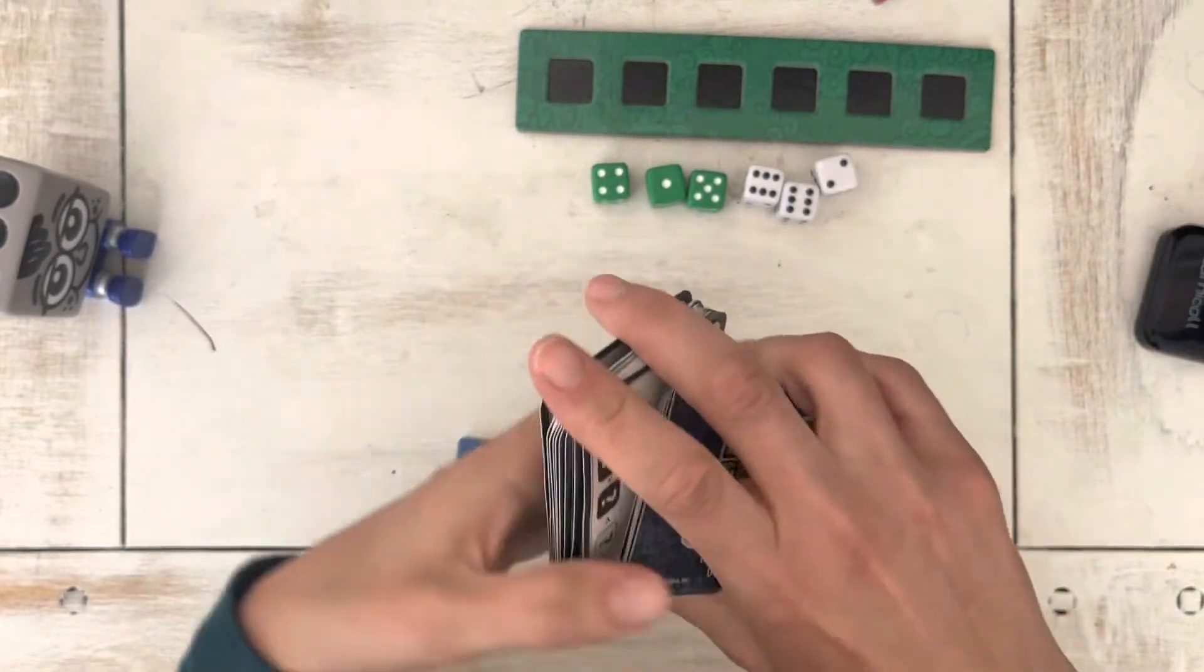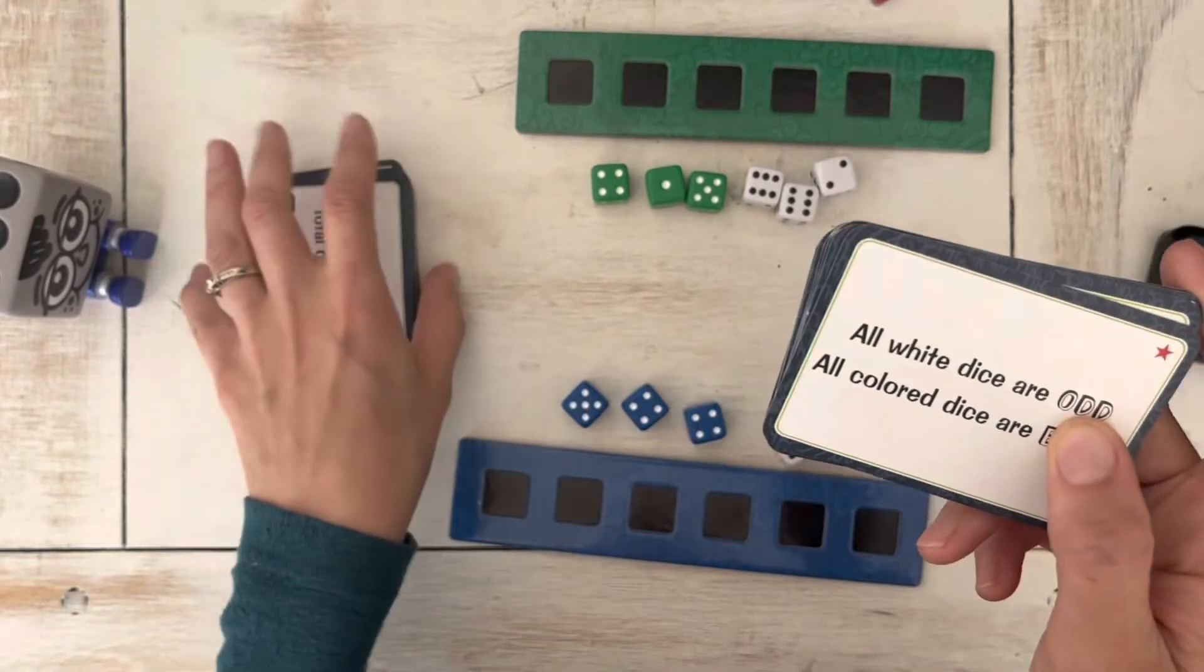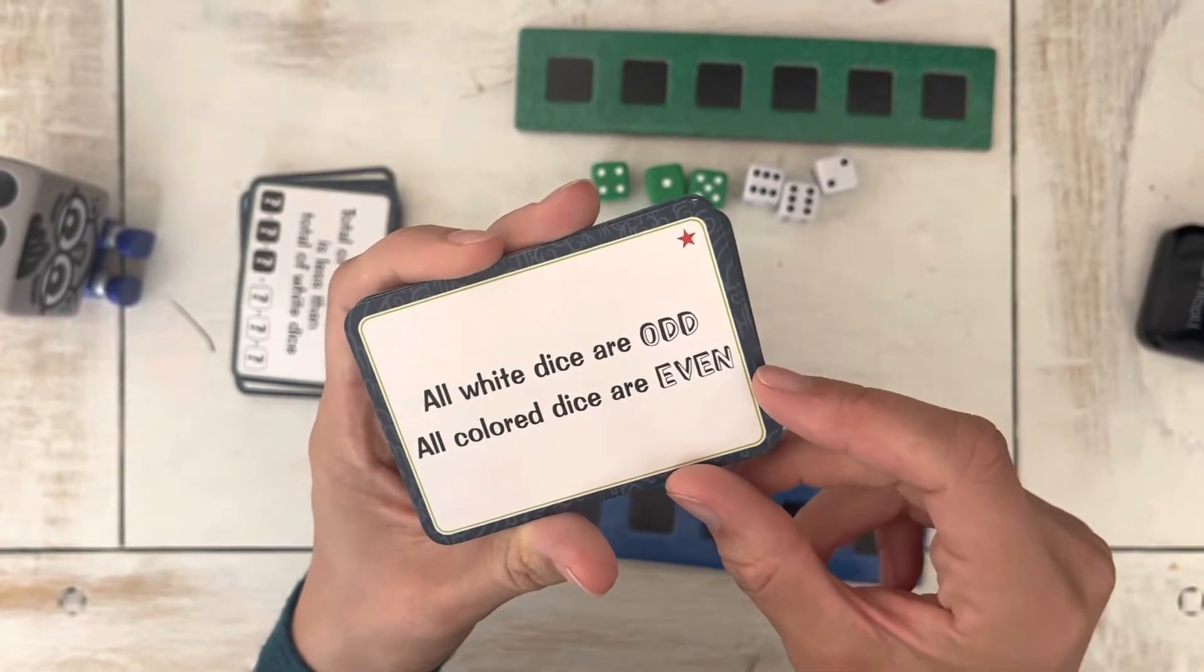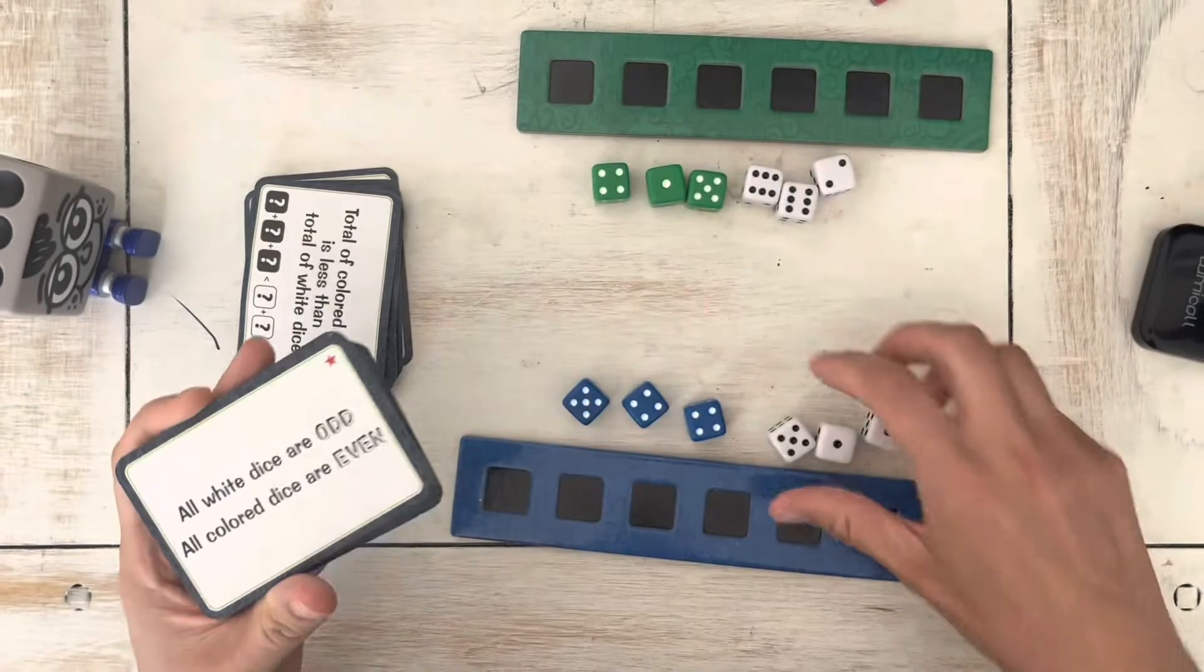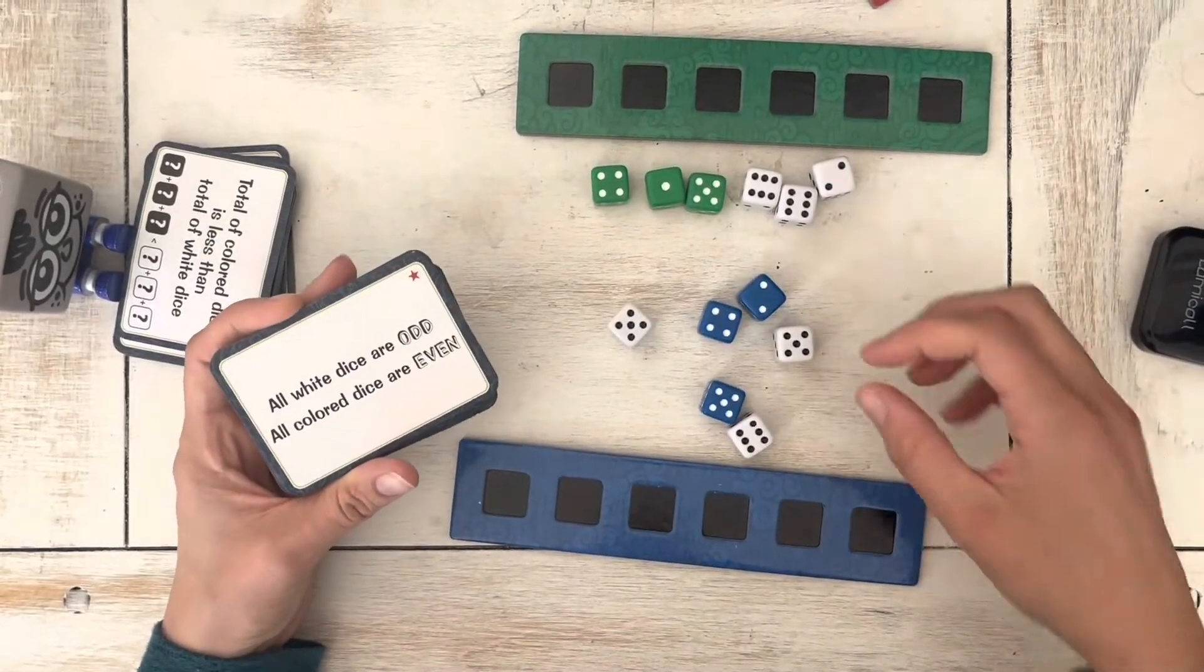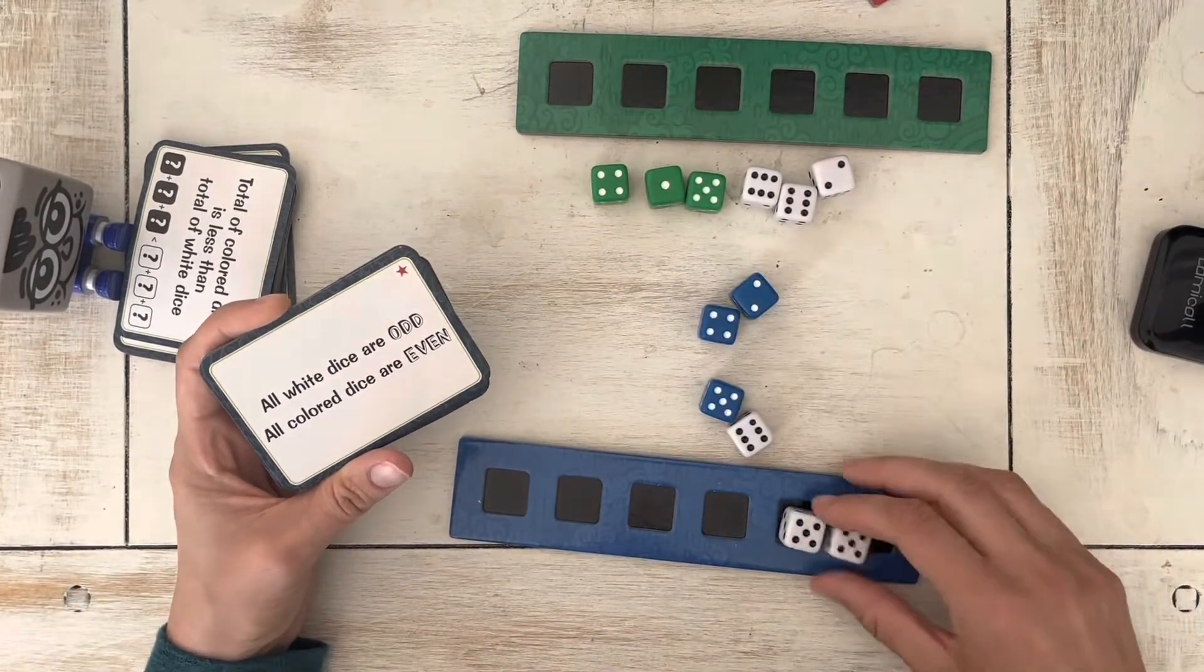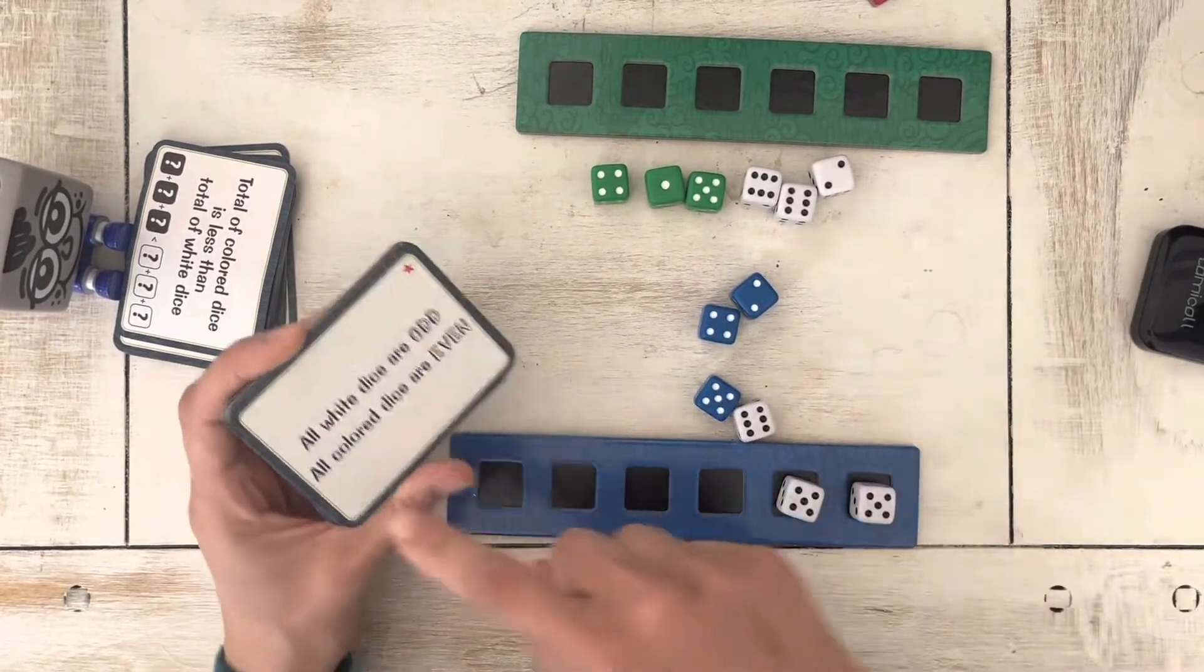But I'll give you a look at what some of the cards are like inside before we do a quick little round. All white dice are odd and all colored even. So we would have to roll until we got all of the odd dice, all of the white ones being odd. And once you get them, you stick them on there and all of the colored dice even.